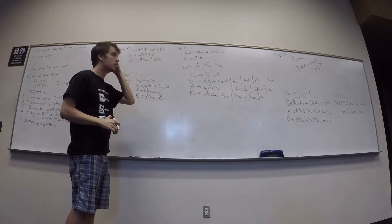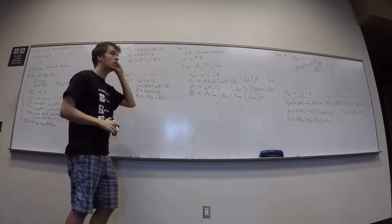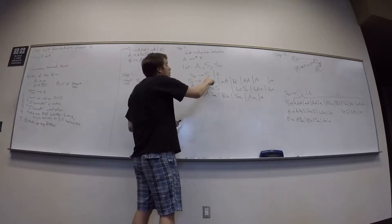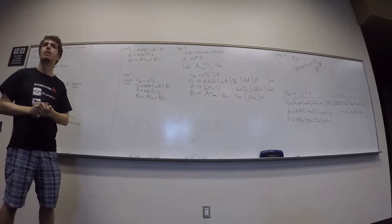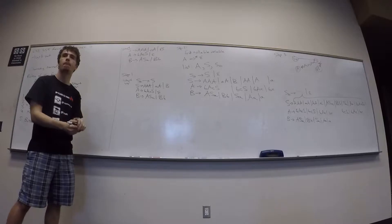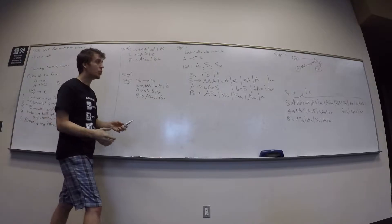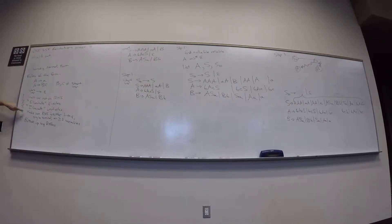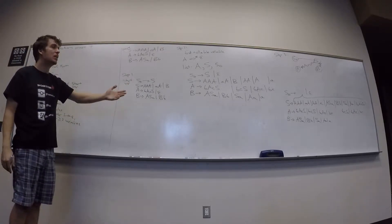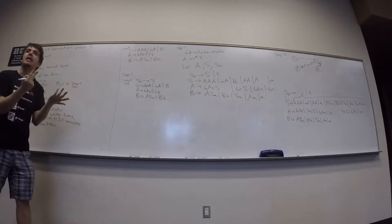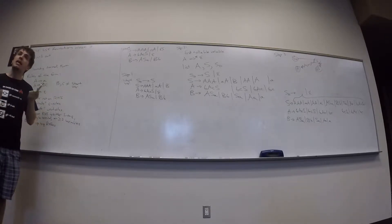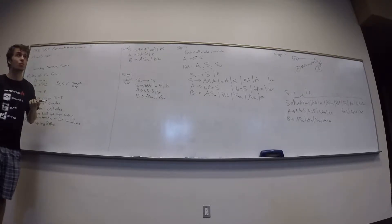Step 4: make sure the right-hand side is either S to empty, a single terminal, or at least two variables. Some rules have mixes of terminals and variables. To fix this, create new variables for each terminal: U_a goes to a, U_b goes to b, U_c goes to c, then plug them back into the rules wherever a terminal appeared in a multi-symbol right-hand side.